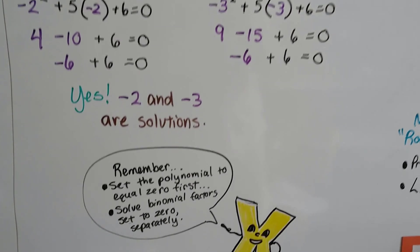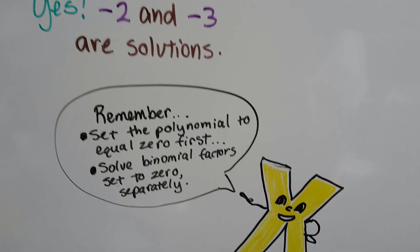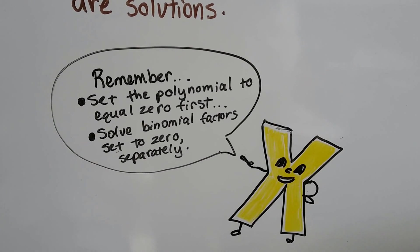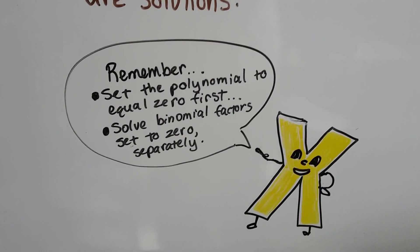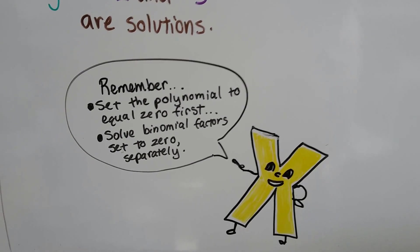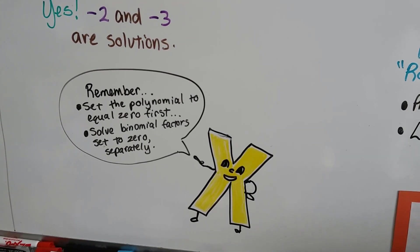So remember, set the polynomial to equal 0 first, and then solve binomial factors set to 0 separately and solve them. And make sure you check them, because you want to make sure you did it correctly. You don't want to just assume you did it correctly.